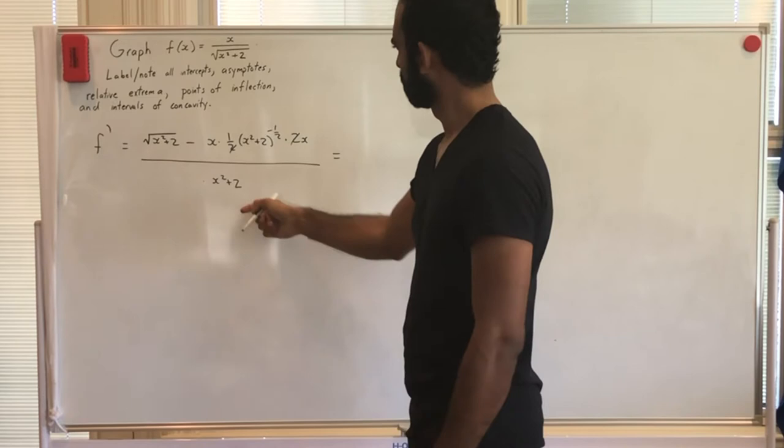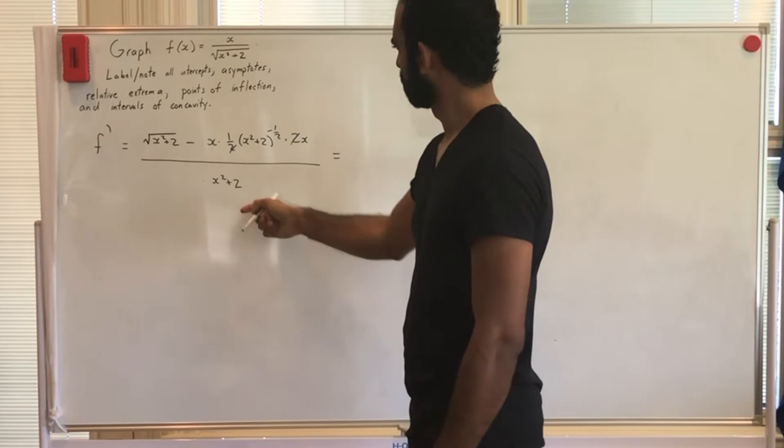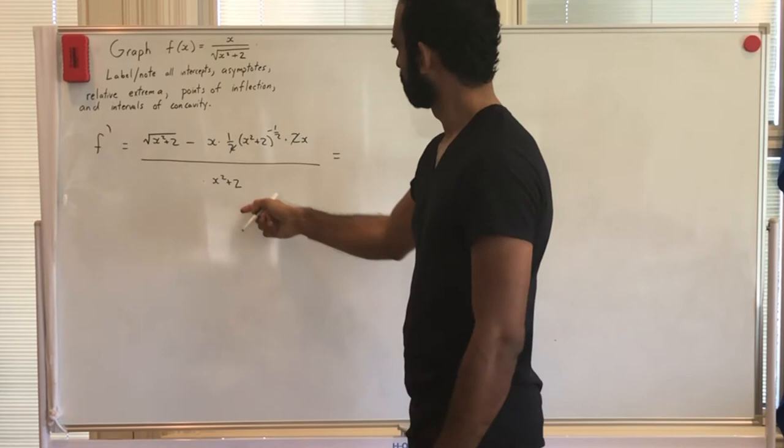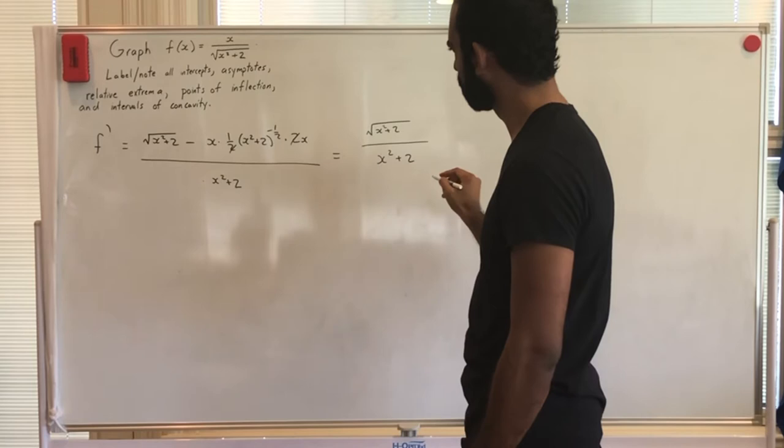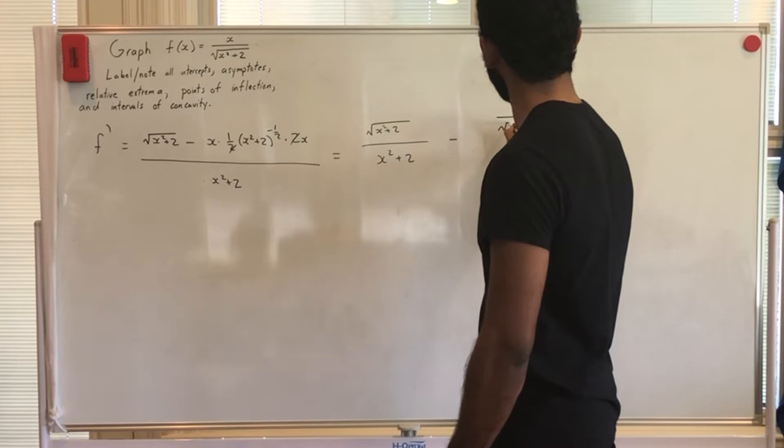I'm going to break this apart into some fractions. The first part is √(x² + 2) over (x² + 2), minus x all over √(x² + 2).